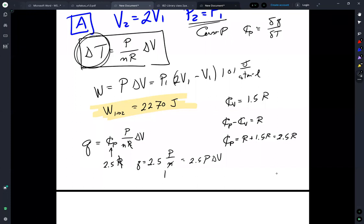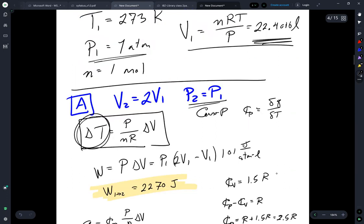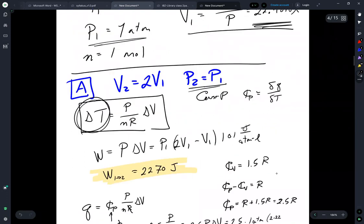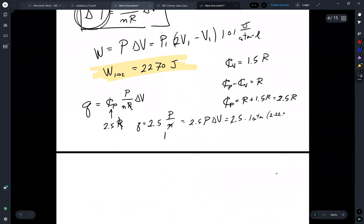So that is 2.5 times 1 atmosphere times 2 times 22.4 minus 22.4. That's the liters. And then we have to multiply this by 101 joule per ATM L. So we get Q is equal to 5656 Joule.